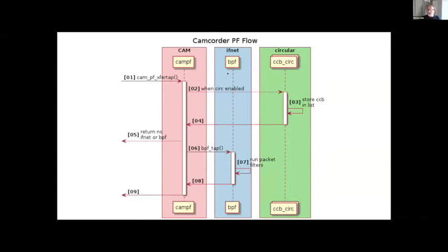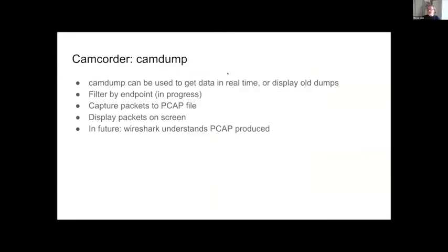For single-device SIMs like an NVMe drive with one namespace, filtering by endpoint isn't all that useful. But for a RAID controller that has multiple devices attached, you can just trace one, which can be quite helpful if you're wanting to look at just one specific device.